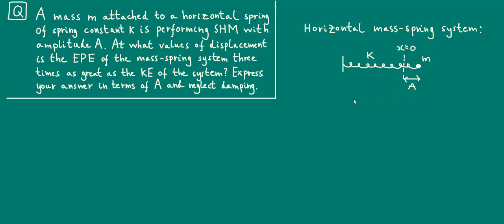Now, the question tells us to neglect damping, which means that the only stores of energy we need to consider in this problem are the elastic potential energy and kinetic energy. Now, as the mass oscillates back and forth about the equilibrium position, there will be a continuous transfer of energy between these two stores of energy that I just mentioned. But the sum of these energy stores will remain constant throughout.